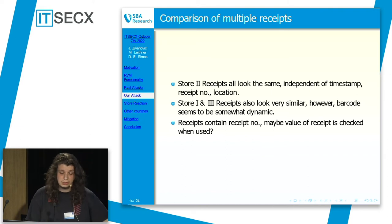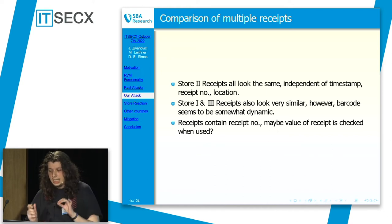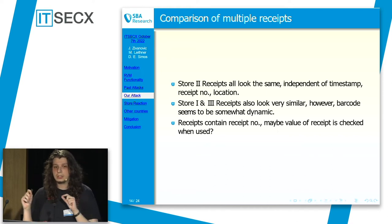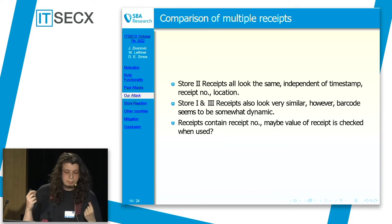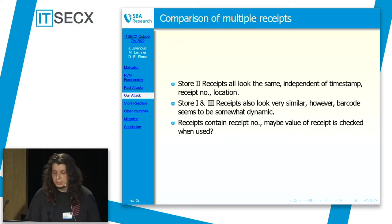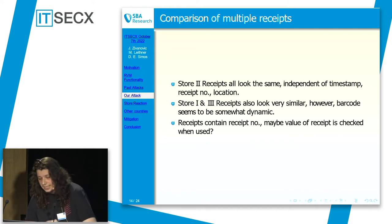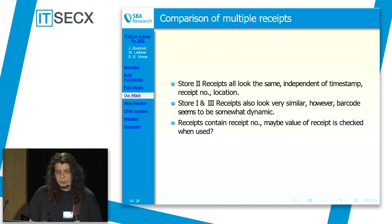Comparing these receipts, store two all look the same, while stores one and three are dynamic. If the receipts all look the same, we can probably do a replay attack — I can take my nine-cent receipt, put it on a copier, copy it 100 times, and suddenly have nine euros to take to a store. But that's not that practical.